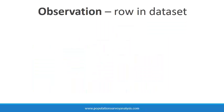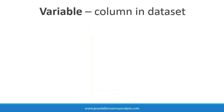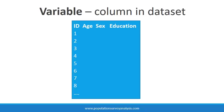Observations are the rows in the dataset and are related to the unit of analysis. For example, observations might be women, households, or children. Variables are the columns in the dataset, and each variable contains a unique piece of information about each observation.